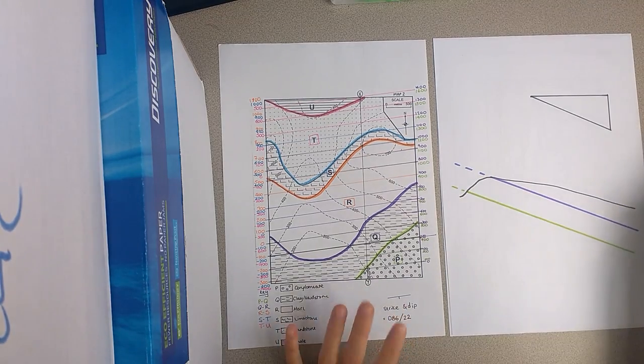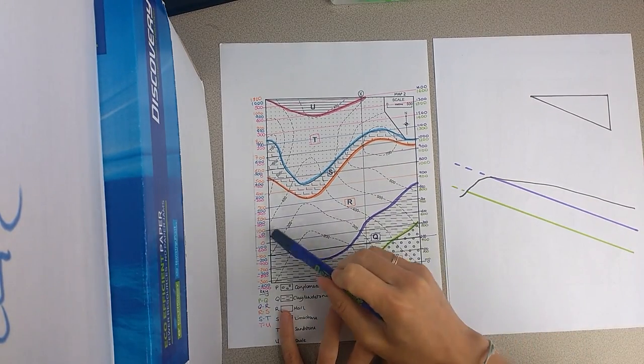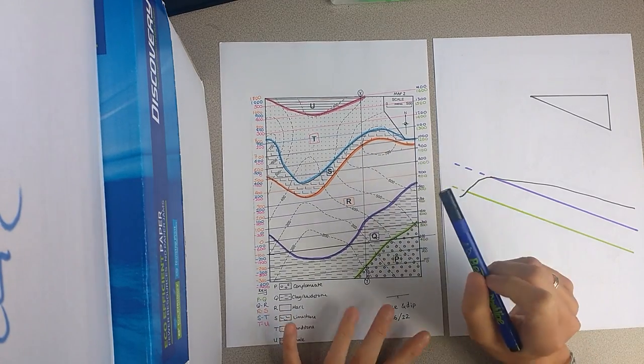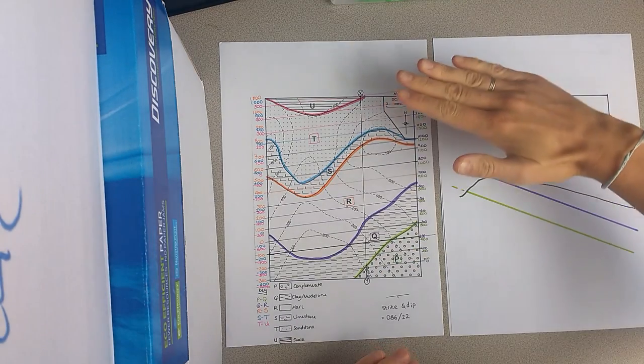So the first step is, these are our surfaces that we're interested in calculating the dip. So these are uniformly dipping flat surfaces.